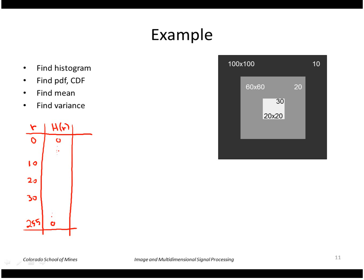So let's do the 30 first. That little region of 20 by 20, 20 times 20 is 400. So I have 400 pixels with the value 30.